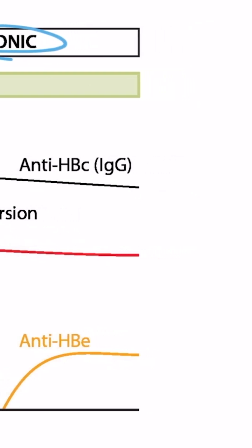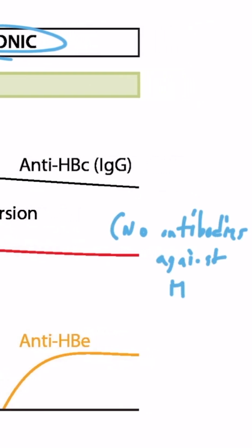You can also see that there are no antibodies formed against the surface. This makes sense because antibodies against the surface indicate immunity, and if the patient has a chronic infection, they're obviously not immune.